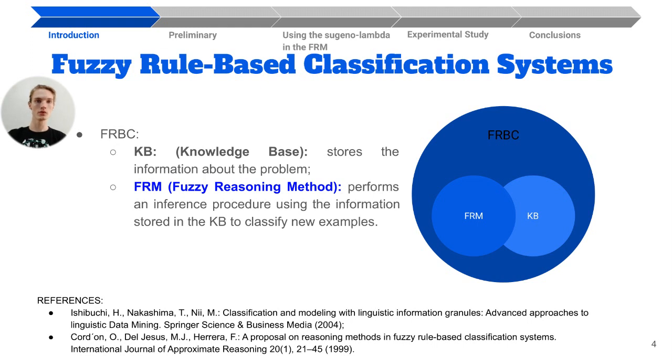The fuzzy rule-based classification system, FRBCS, commonly provides an interpretable model supported by linguistic terms while also achieving good performances. It has two main components: the knowledge base, KB, which stores the information about the problem,